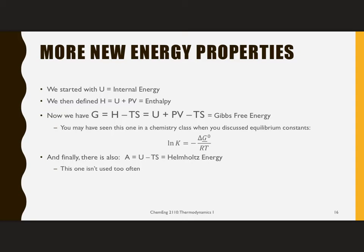Well, we've got a couple more of these. Now that we have entropy in our set of tools, we can define Gibbs free energy. So Gibbs free energy is defined as G equals H minus TS, that enthalpy minus temperature times entropy. And H is, recall, U plus PV, so G is also U plus PV minus TS.